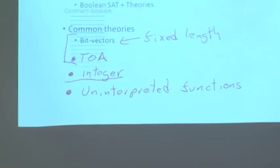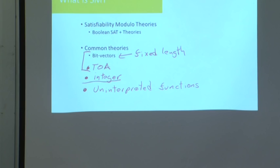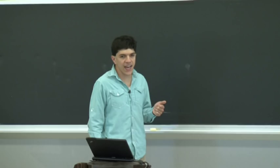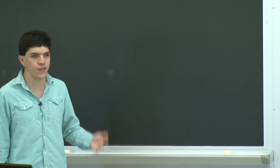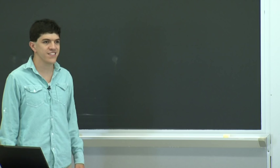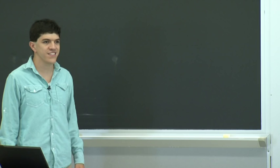SMT solvers rely on our ability to solve SAT problems — problems involving purely Boolean variables and Boolean constraints — determining whether there is an assignment to those Boolean variables that is satisfying. For many years people were taught this is an NP-complete problem and you shouldn't go near it. But it turns out we actually have very, very good SAT solvers today.